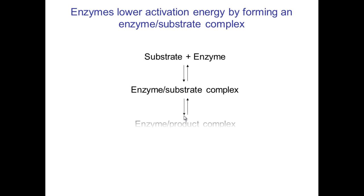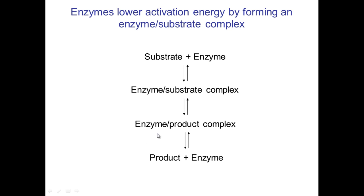Enzymes work by lowering activation energy and they form something called an enzyme-substrate complex — that is essentially where the enzyme and the substrate are joined. These are the stages involved: you have the enzyme and the substrate, that forms an enzyme-substrate complex, and then once the product has been produced, that forms the enzyme-product complex, and therefore you then have the product and the enzyme separate.